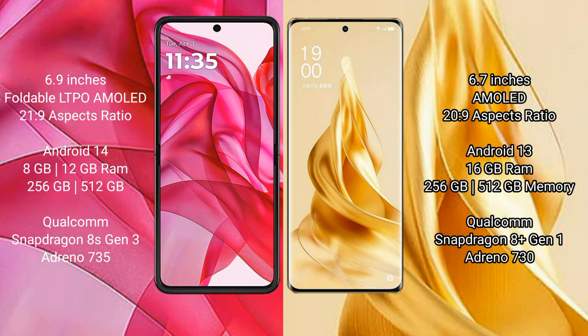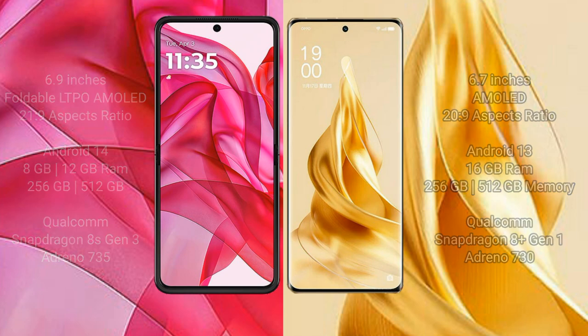The Motorola RAZR 50 Ultra comes with 8GB or 12GB RAM and 256GB or 512GB internal storage, powered by the Qualcomm Snapdragon 8s Gen 3 processor with an Adreno 735 GPU. The Oppo Reno 9 Pro Plus comes with 16GB RAM and 256GB or 512GB internal storage, powered by the Qualcomm Snapdragon 8s Gen 1 processor with an Adreno 730 GPU.